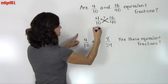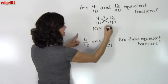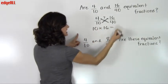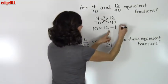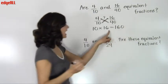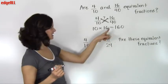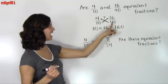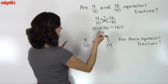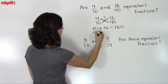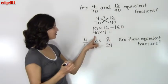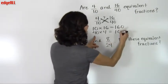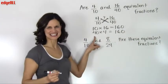So my first calculation is going to be, what is 10 times 16? 10 times 16 equals 160. And then my second calculation is then going to be this cross multiplication of 4 times 40 or 40 times 4, either way. 4 times 40 or 40 times 4 also equals 160.